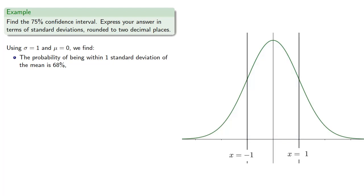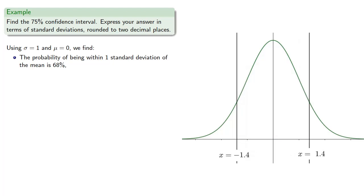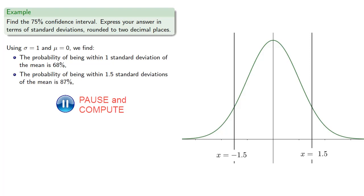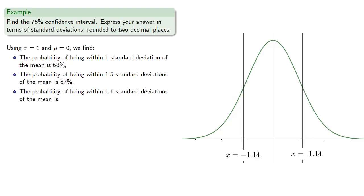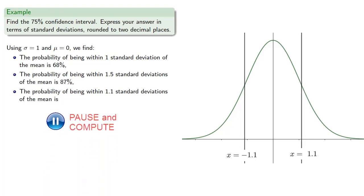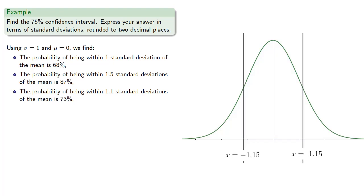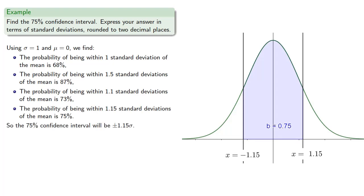We'll widen our interval — trying 1.5 standard deviations gives too much, so we narrow to 1.1 standard deviations, which gives 73%. Widening a bit more to 1.15 standard deviations, we find the 75% confidence interval is plus or minus 1.15 standard deviations.